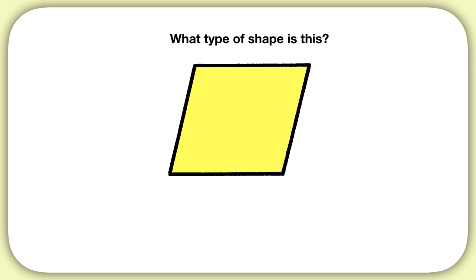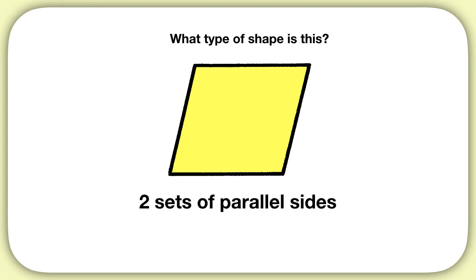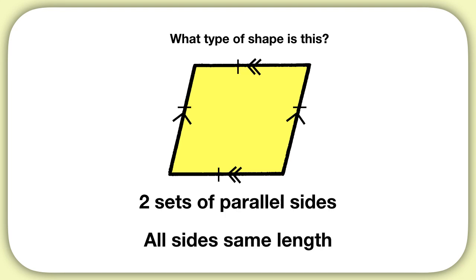Let's identify what type of shape this is. How many sets of parallel sides does this shape have? You can see this shape has two sets of parallel sides, here and here. Now does this shape have any right angles? No, there are no right angles on this shape. What about the side lengths — are they the same? Yes, you can see every side in this shape is the same length.